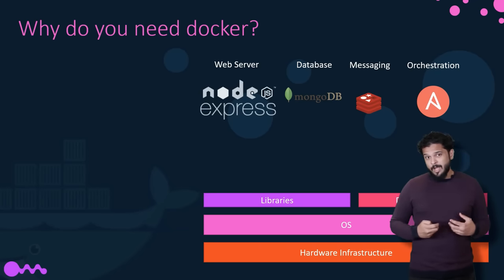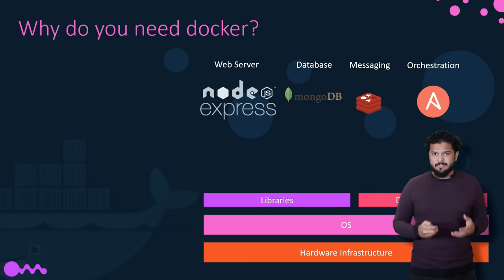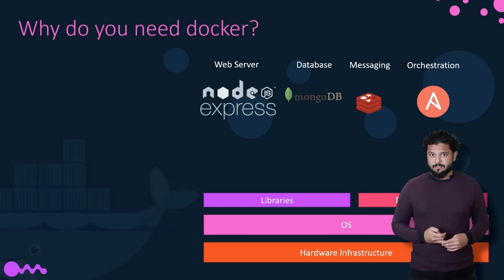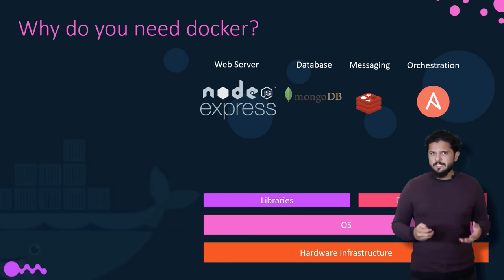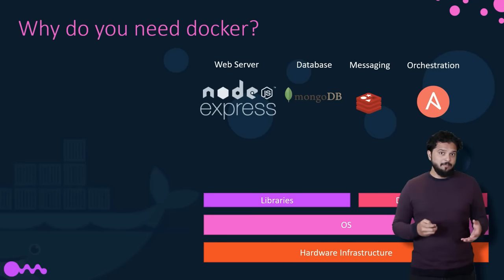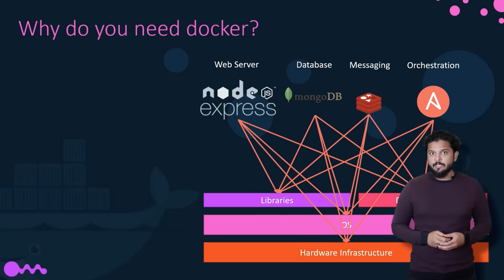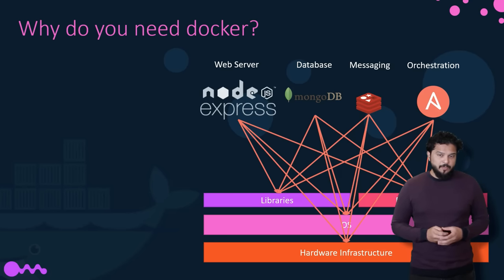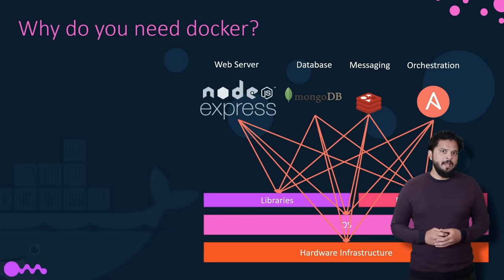Let me start by sharing how I got introduced to Docker. In one of my previous projects, I had this requirement to set up an end-to-end application stack including various different technologies like a web server using Node.js, a database such as MongoDB, a messaging system like Redis, and an orchestration tool like Ansible. We had a lot of issues developing this application stack with all these different components. First of all, their compatibility with the underlying OS was an issue. We had to ensure that all these different services were compatible with the version of OS we were planning to use, and there were times when certain versions of these services were not compatible with the OS.